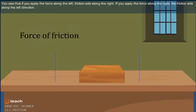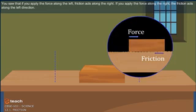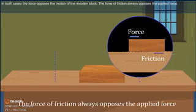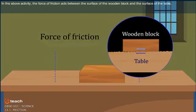You saw that if you apply the force along the left, friction acts along the right. If you apply the force along the right, the friction acts along the left direction. In both cases, the force opposes the motion of the wooden block. The force of friction always opposes the applied force. In the above activity, the force of friction acts between the surface of the wooden block and the surface of the table.